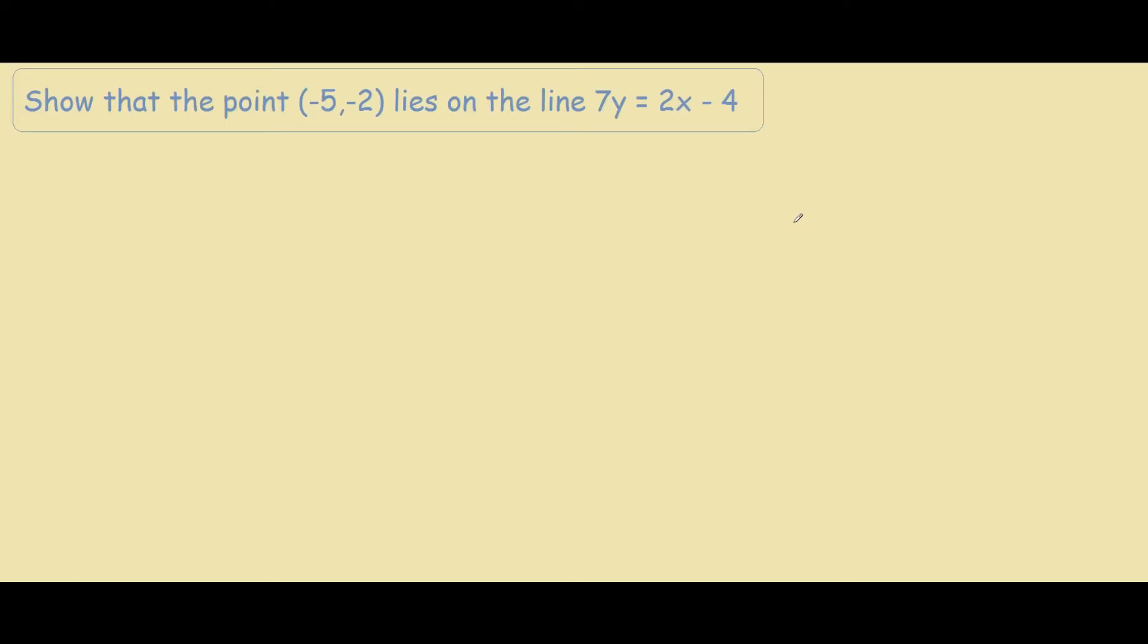To solve this problem you would substitute negative 5 and negative 2 into the equation and see if both sides were equal to each other. The second way to solve this problem is to graph this equation and see if the position negative 5, negative 2 lies on this line.